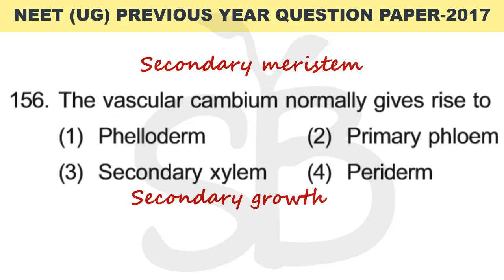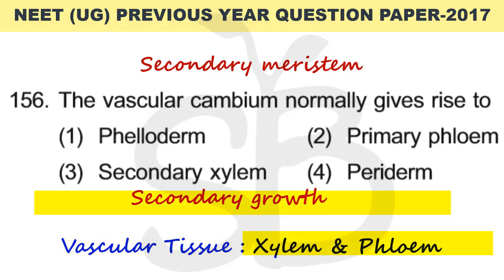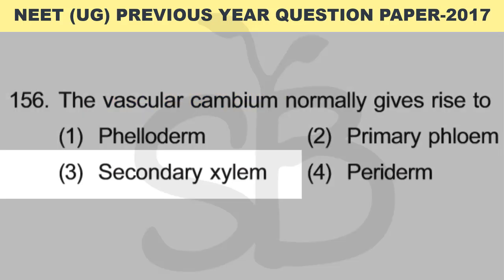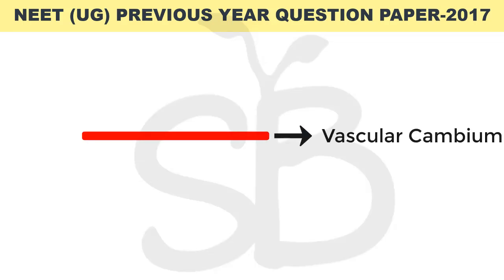Examples of vascular tissues are xylem and phloem. The vascular cambium helps in the secondary growth of xylem and phloem. So the correct answer is secondary xylem. Secondary growth in plants is produced by vascular cambium, which develops and divides in two directions. The cambium is meristematic, and these meristematic cells can differentiate into different cell types.